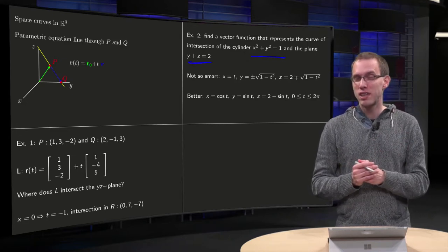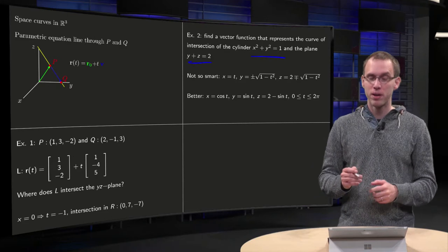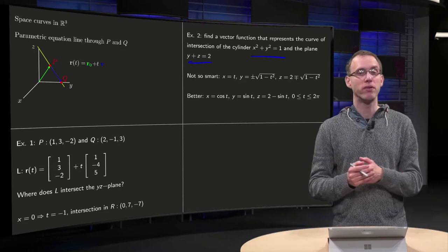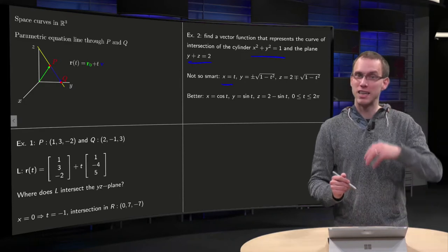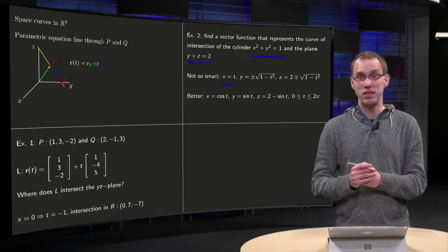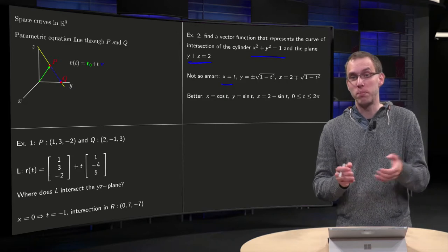OK, let's try this in a not so smart way. You can just set one of the coordinates to t, for example set x equals t, and then express all the other coordinates in t. This does work in principle, but not so nicely as you will see.